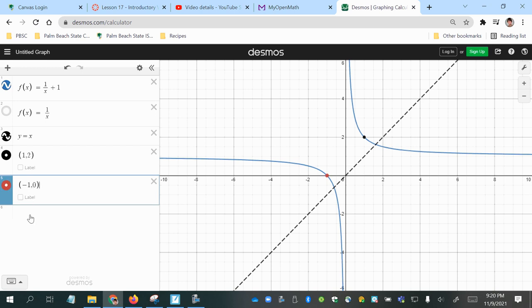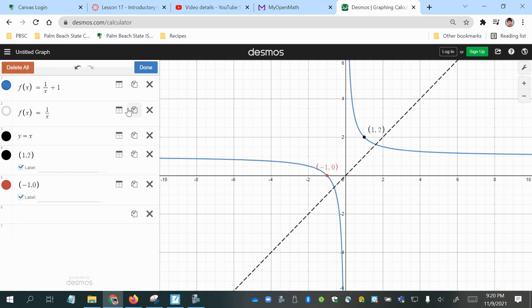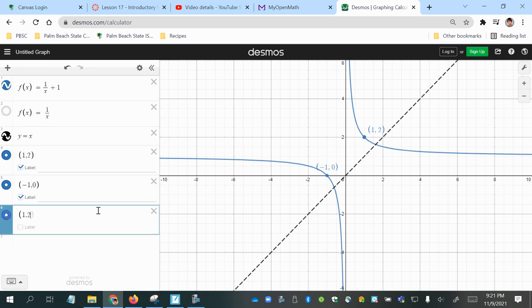So notice that those both fell on my graph of f of x. And if I do the reverse of those, then I will have 1, 2. I meant to say I was supposed to switch those, 2, 1.